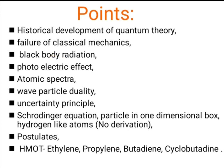Third point is black body radiation, next is photoelectric effect, atomic spectrum, wave particle duality principle, Heisenberg uncertainty principle, then Schrödinger equation for particle in 1D box and for hydrogen-like atoms, then the postulates, then HMOT of ethylene, propylene, butadiene and cyclobutadiene. These are the points included in our syllabus of quantum chemistry.